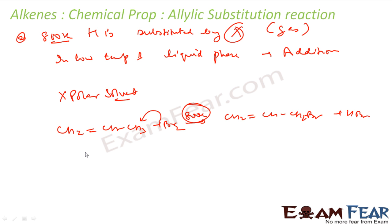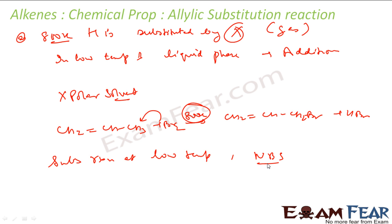But if you can't maintain high temperature and still want a substitution reaction at low temperature, you can use NBS — N-bromosuccinimide. At 350 Kelvin, you can also achieve the substitution reaction. In that case we have a free radical reaction. Let's look at NBS.